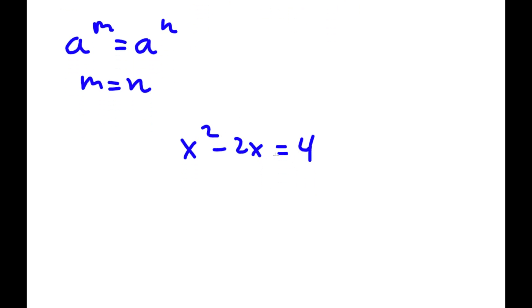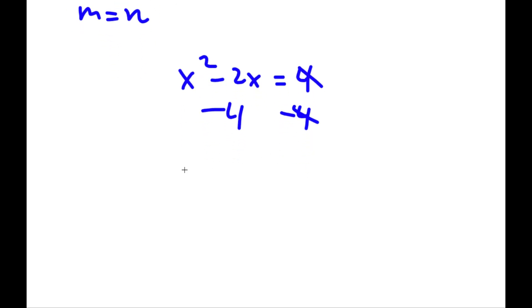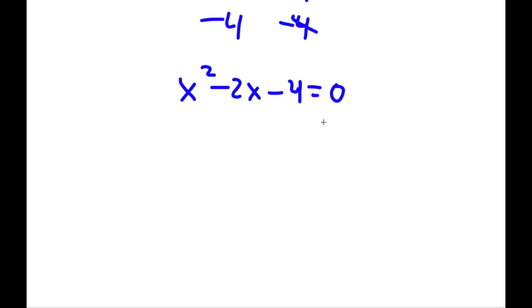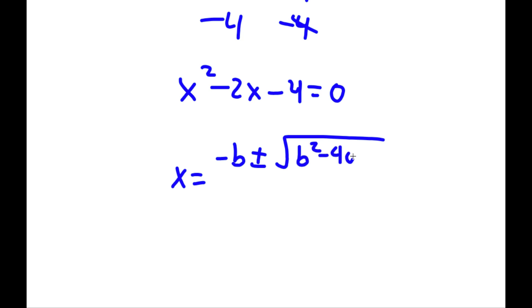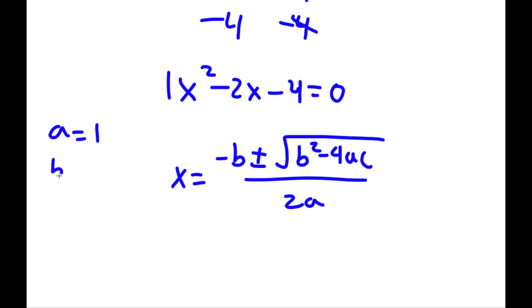So now we have an algebraic equation to solve. The first thing I'm going to do is subtract 4 on both sides, so these two cancel out, and I have x squared minus 2x minus 4 is equal to 0. Now I have a quadratic equation, and to solve this I'm going to use the quadratic formula: negative b plus or minus the square root of b squared minus 4ac, all over 2a. In this case, a is equal to 1, b is equal to negative 2, and c is equal to negative 4.